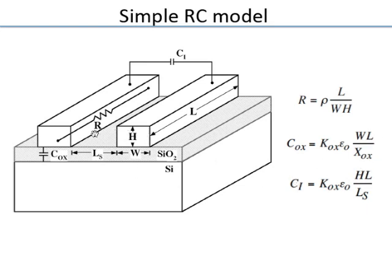The inter-wire capacitance between metals in the same layer uses the area of the vertical plate — because you are talking about capacitance between two adjacent wires. The area is H times L, and the separation is S, giving the lateral capacitance formula.